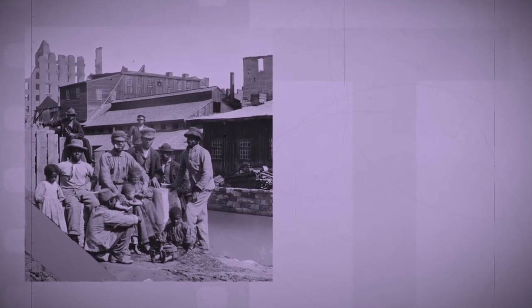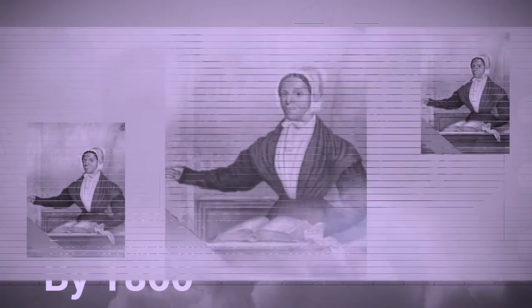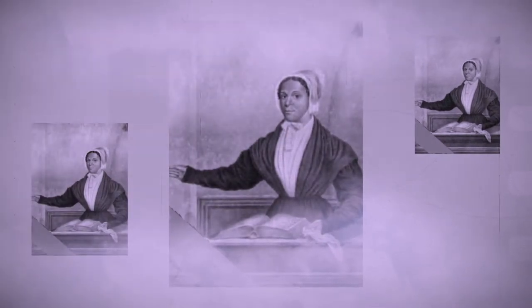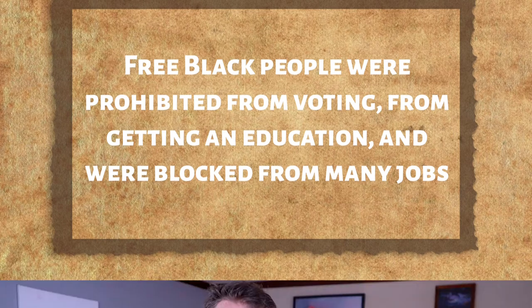And there were actually a considerable number of free black people as well. By 1860, there were 250,000 free black people in the South and about that number in the North as well. Most were either freed by their owners, often in their wills, or they worked in their limited free time to earn extra money and then purchase their freedom. But still, they weren't quite free — they were prohibited from voting, from getting an education, and they were blocked from many jobs. Still yet, free black communities emerged in several southern cities where they often relied on each other.